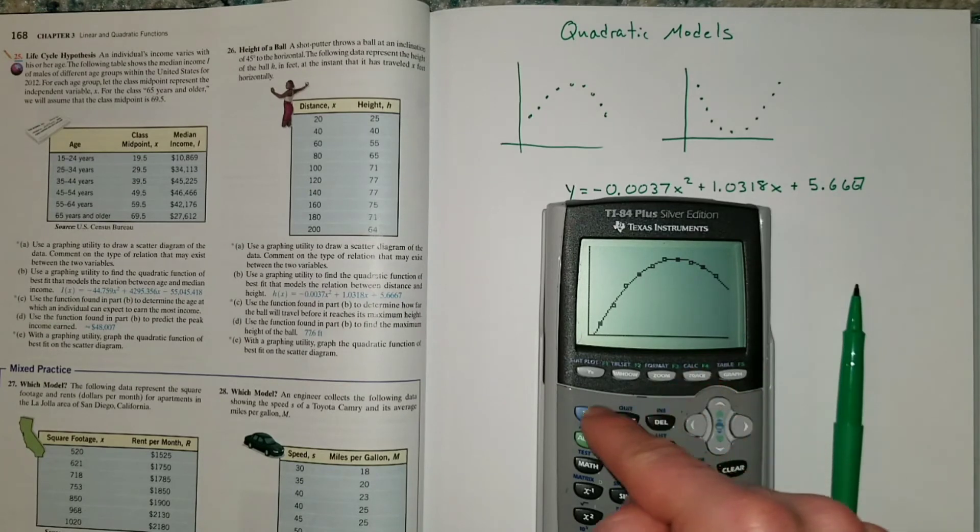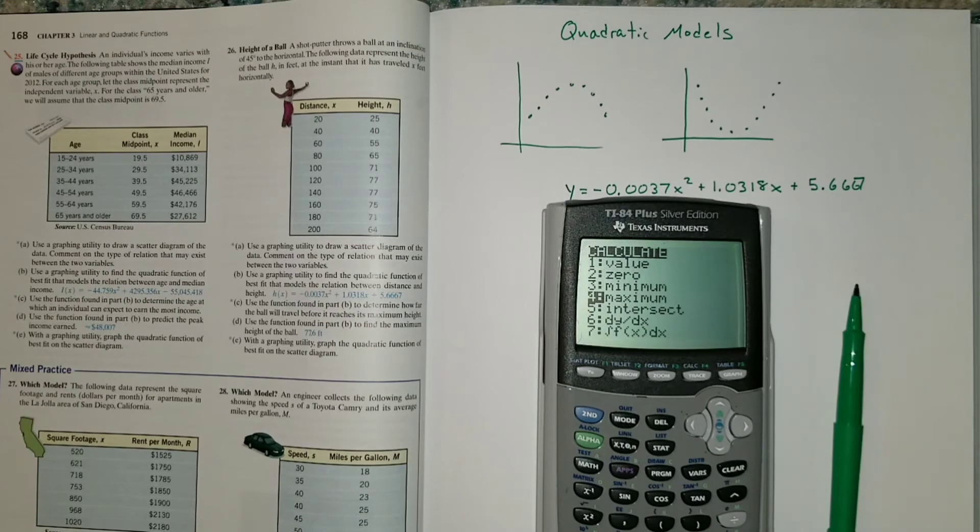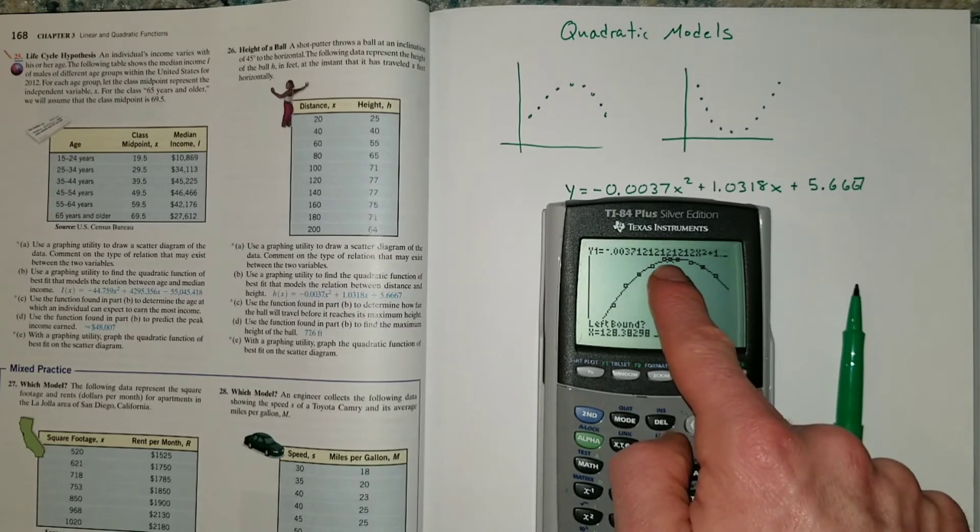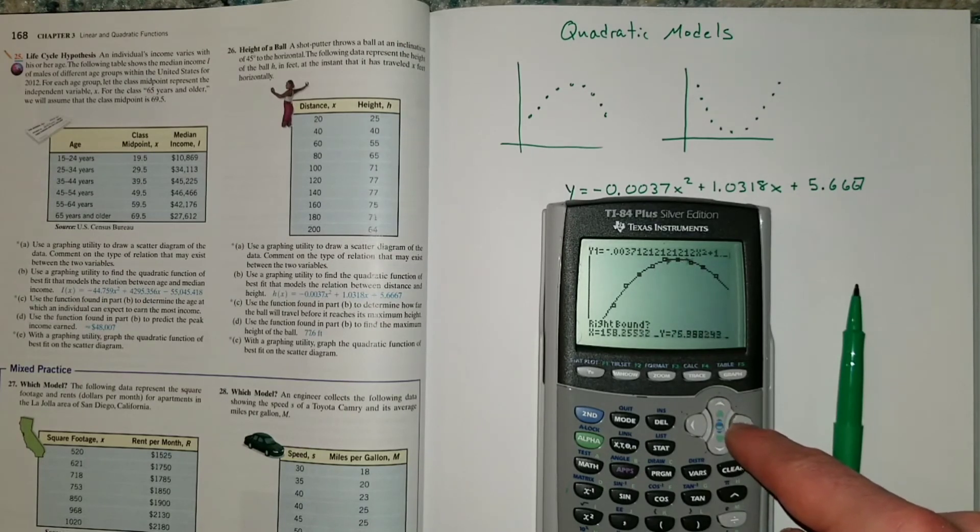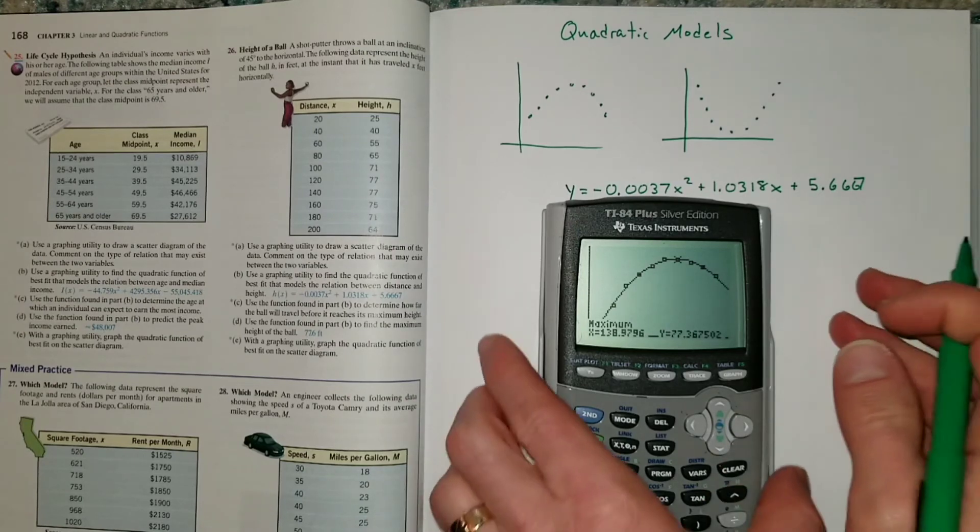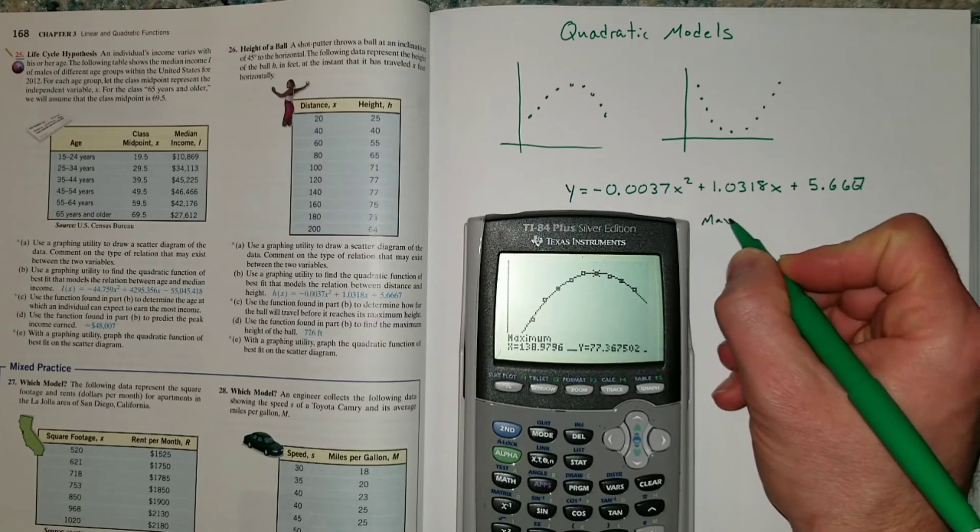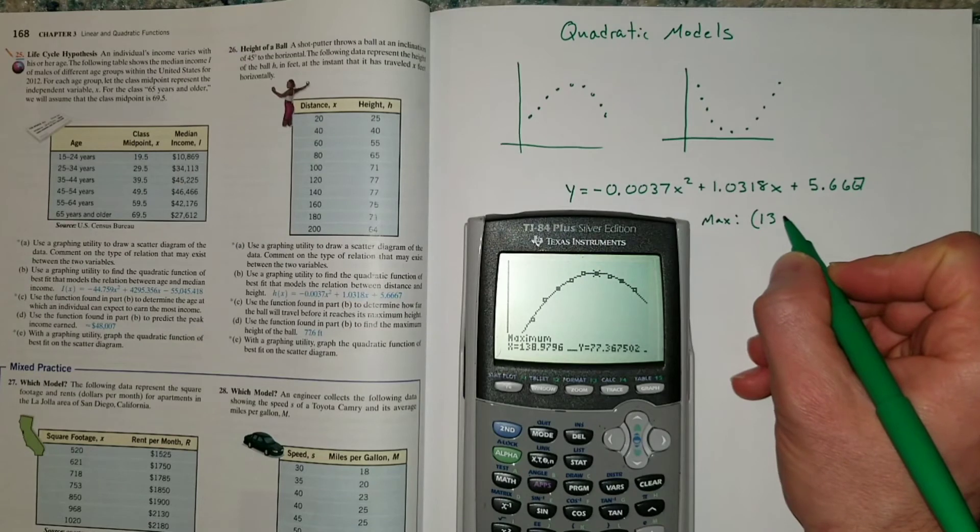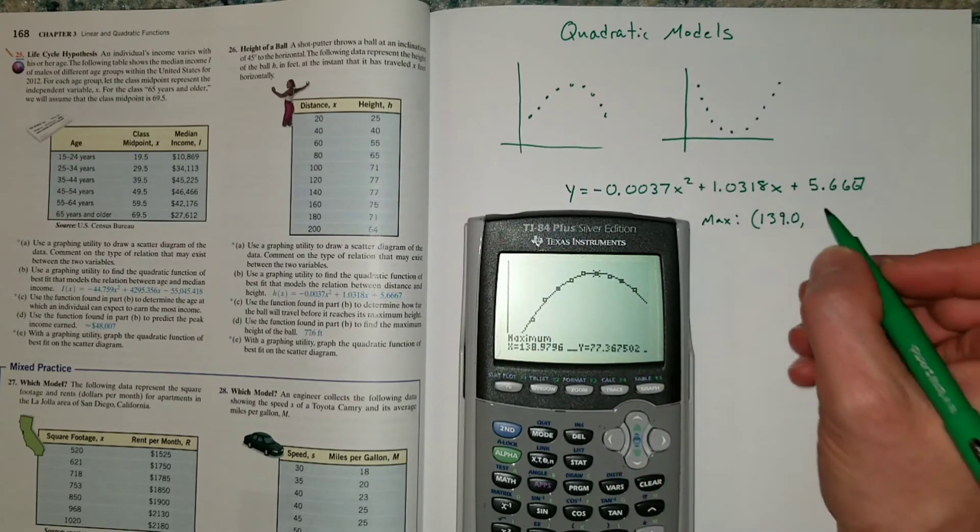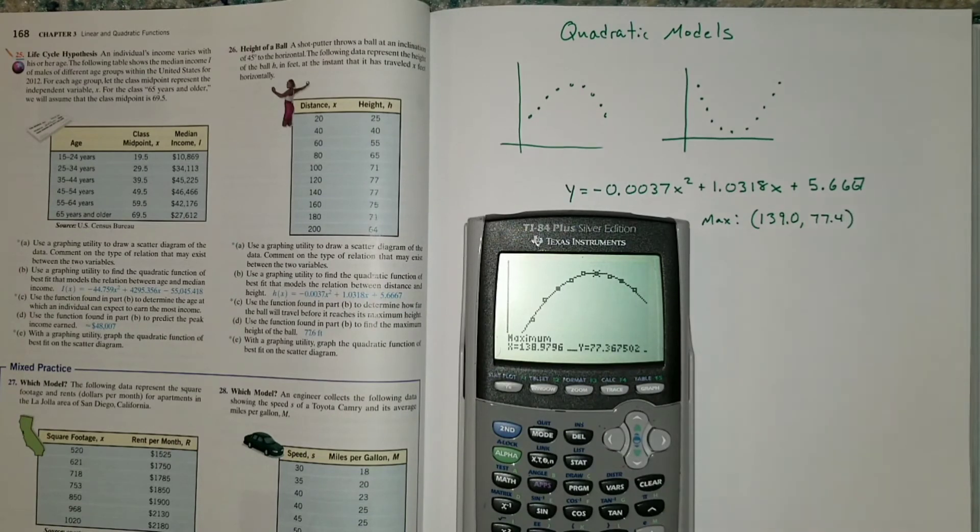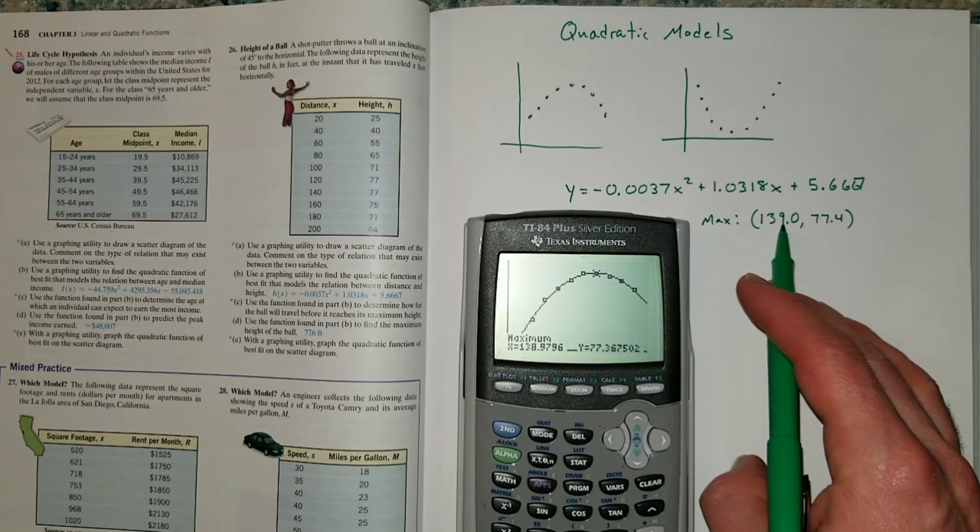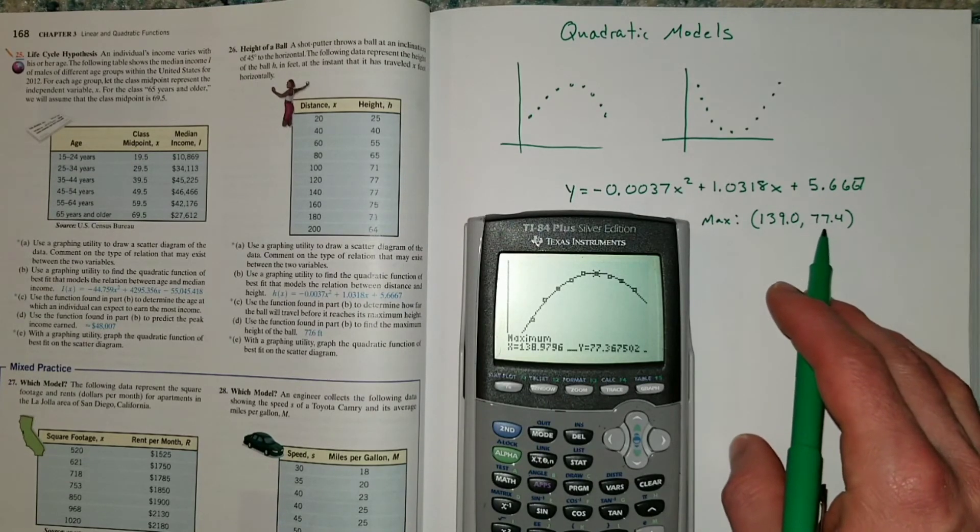And then let's take a look at that maximum. There's a maximum value on the function. Let's find that using the calculate menu. If I go to my calculate menu and I go to maximum, I can find that local max, which is the vertex. I just need a left endpoint. So I move my cursor over to where I think it's left of the max. I need a right bound, so I move it to the right of where I think that max is. And then I need a guess, so I just put it in the middle here somewhere. And it tells me that the max is at approximately 139.0 really, if I round that. So that means that 139 feet away from the person who's throwing the shot put, it will reach a maximum height. And that maximum height it reaches is 77.4 feet.